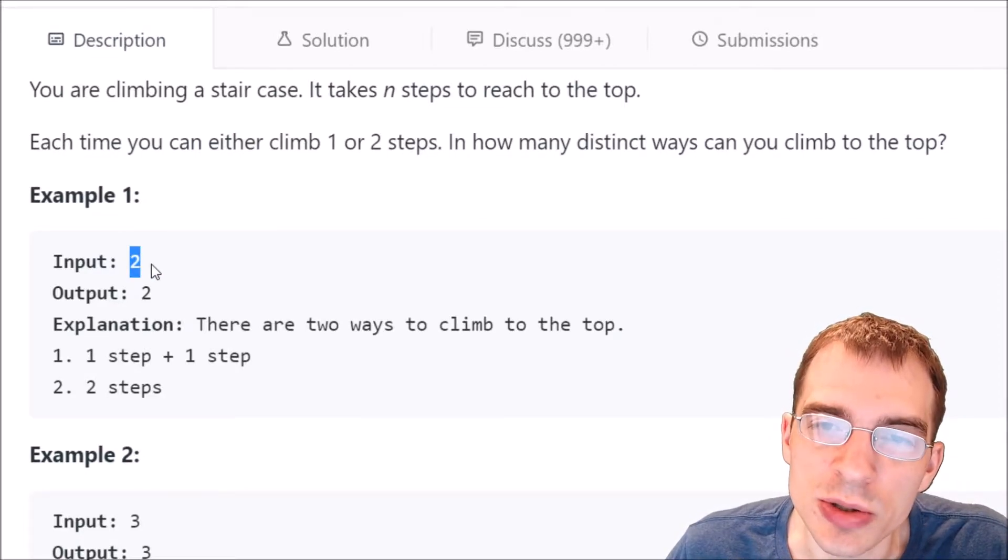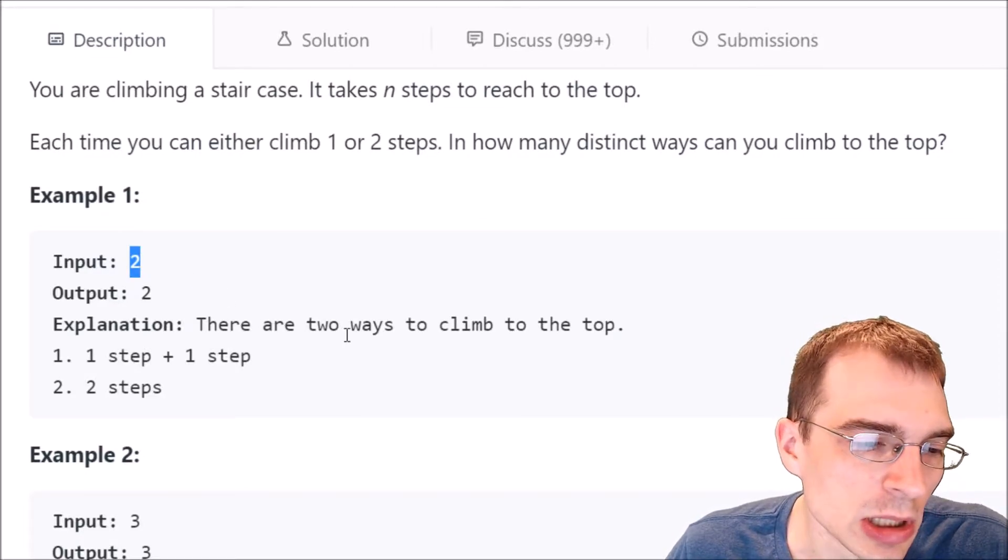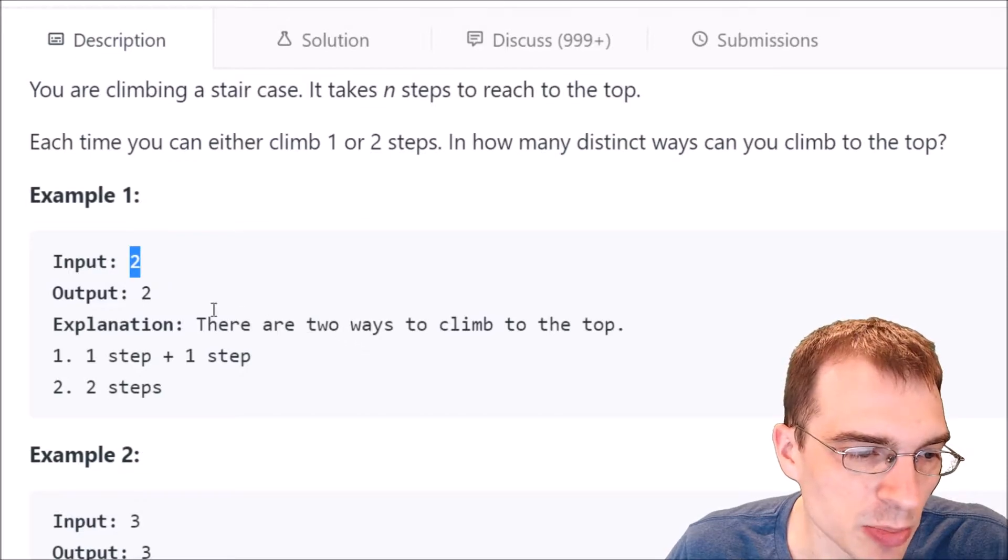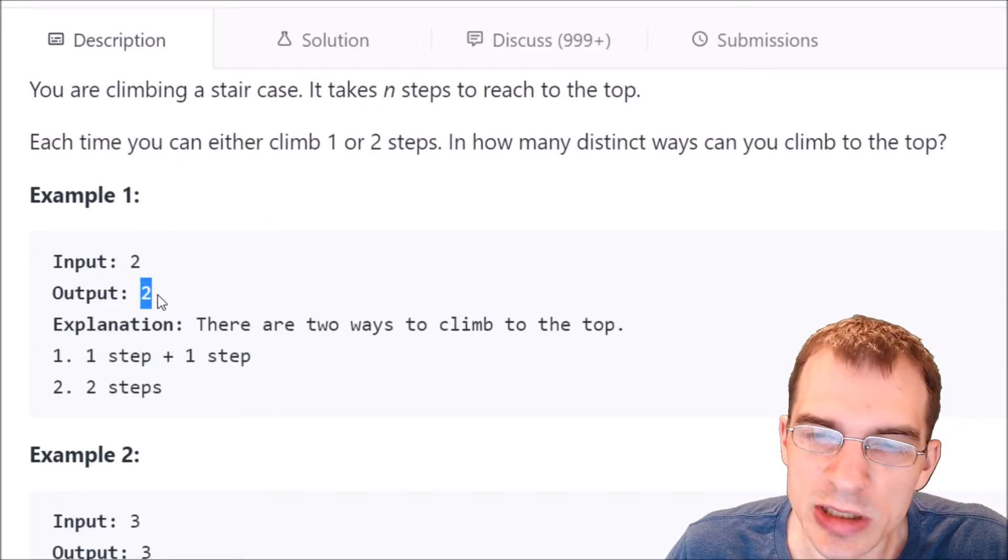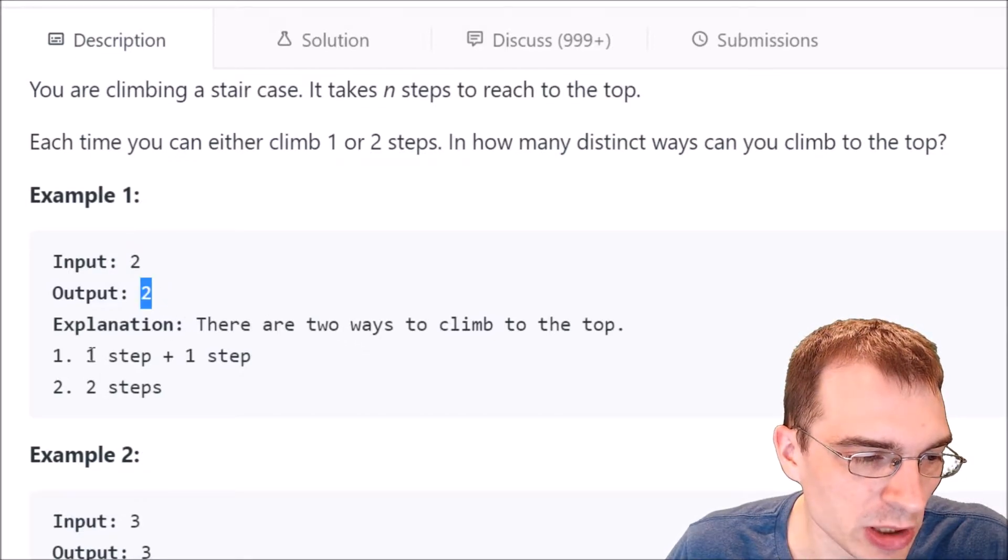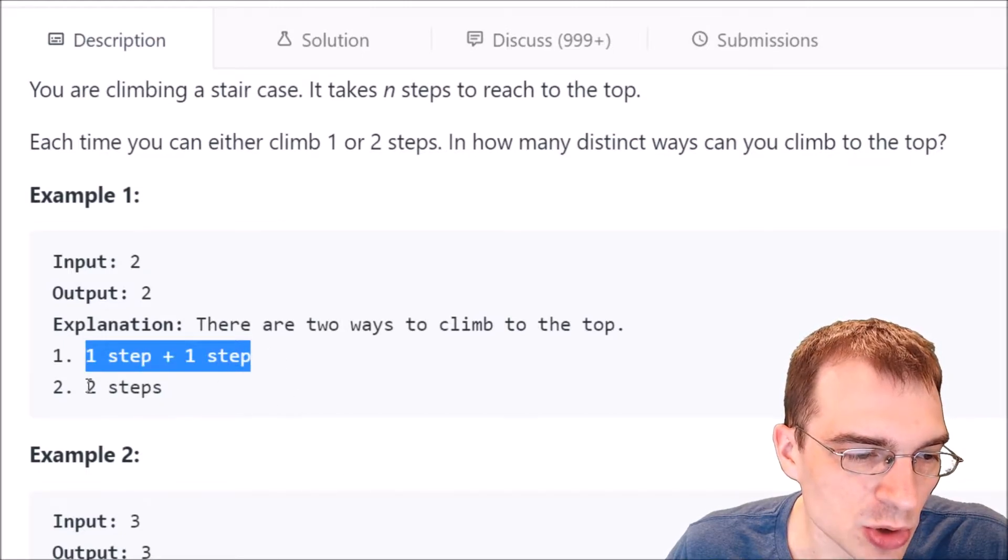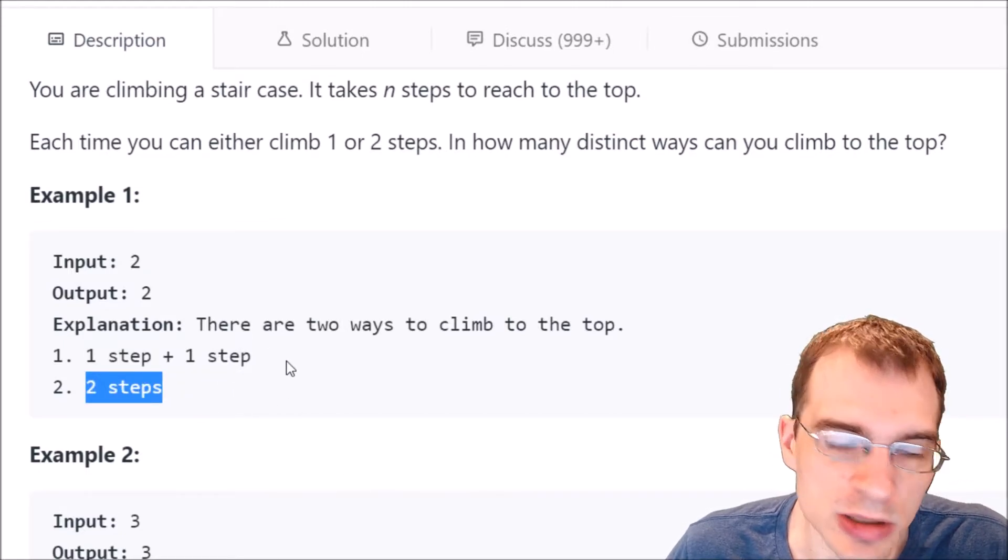If an input value of two, so a staircase that's two tall, how many different ways can we get to the top? Well the output is two so I guess there's two different ways and these are the ways. We can take one step then one step or two steps at once. So the only two ways to do it.